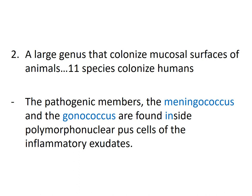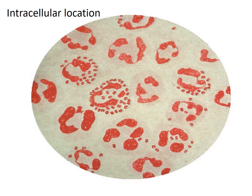Neisseria is a large genus that colonizes mucosal surfaces of animals. Eleven species have been found to colonize mucosal surfaces in humans. The pathogenic members — the meningococcus and the gonococcus — are found inside polymorphonuclear cells of the inflammatory exudate. This is a gram stain of a clinical specimen where we can see the polymorphonuclear cells, the neutrophils, and within these cells the diplococci bacteria of Neisseria.